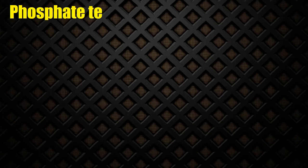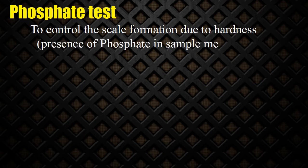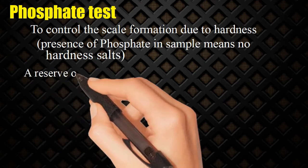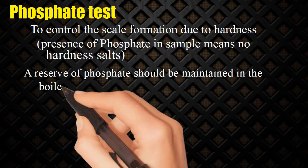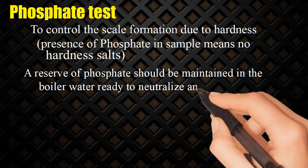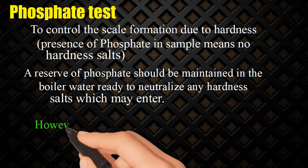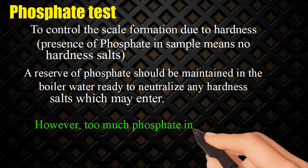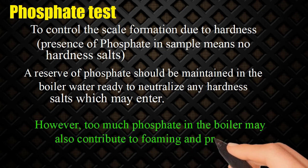Phosphate test: This test is to control scale formation due to hardness. Presence of phosphate in the sample means no hardness salts. A reserve of phosphate should be maintained in the boiler water ready to neutralize any hardness salts which may enter. However, too much phosphate in the boiler may also contribute to foaming and priming.